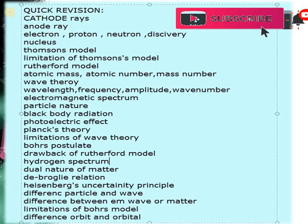Now we will do a quick review of this chapter. Because this chapter is quite big and you have learned a lot of things. First, we studied anode rays, cathode rays, discharge tube experiment, then discovery of electron, proton, neutron and nucleus. Then we studied Thomson model, limitation of Thomson model, Rutherford model. How to find atomic mass, atomic number, mass number, wave theory, wavelength frequency, amplitude wave number. Then we studied the electromagnetic spectrum, particle nature of matter, black body radiation, photoelectric effect, Planck's theory, limitations of wave theory, Bohr's postulate, drawback of Rutherford model, hydrogen spectra, dual nature of matter, de-Broglie's relationship, Heisenberg uncertainty principle, difference between particle and wave, difference between EM wave and matter wave, limitations of Bohr's model, and difference between orbit and orbital. We have studied so far.